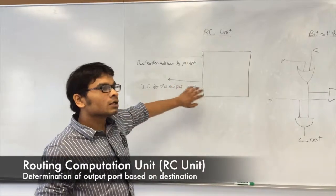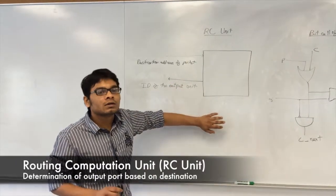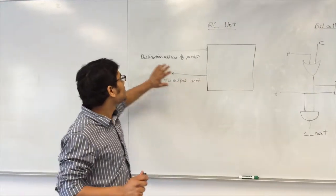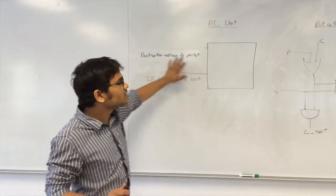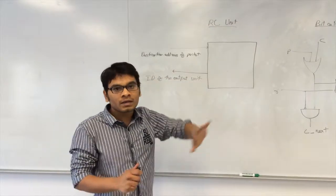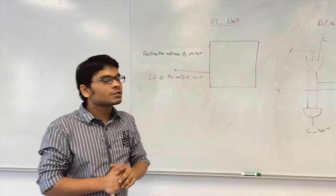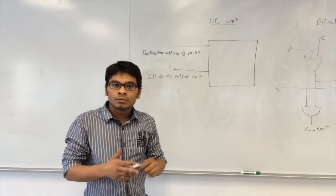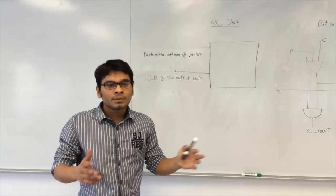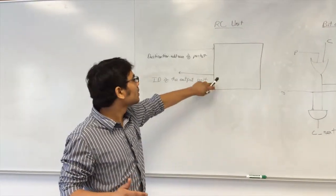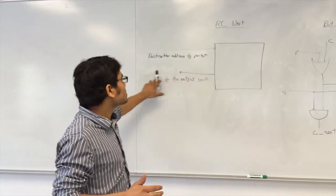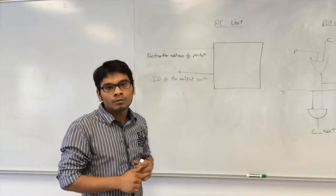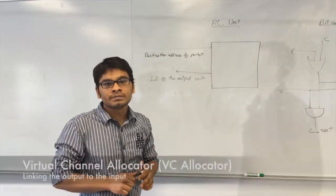The RC unit is just a lookup table where it gets the destination address of the packet from the virtual channel, looks up the table, and tells which output port the packet needs to be forwarded to, and passes on that information — the ID of the output port — to the virtual channel.